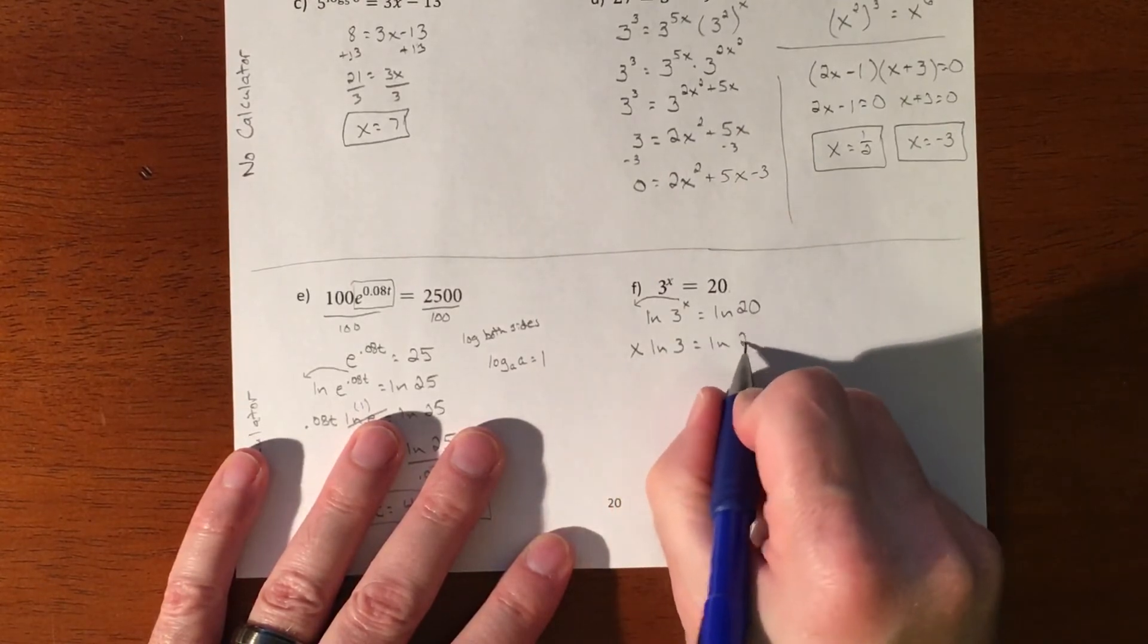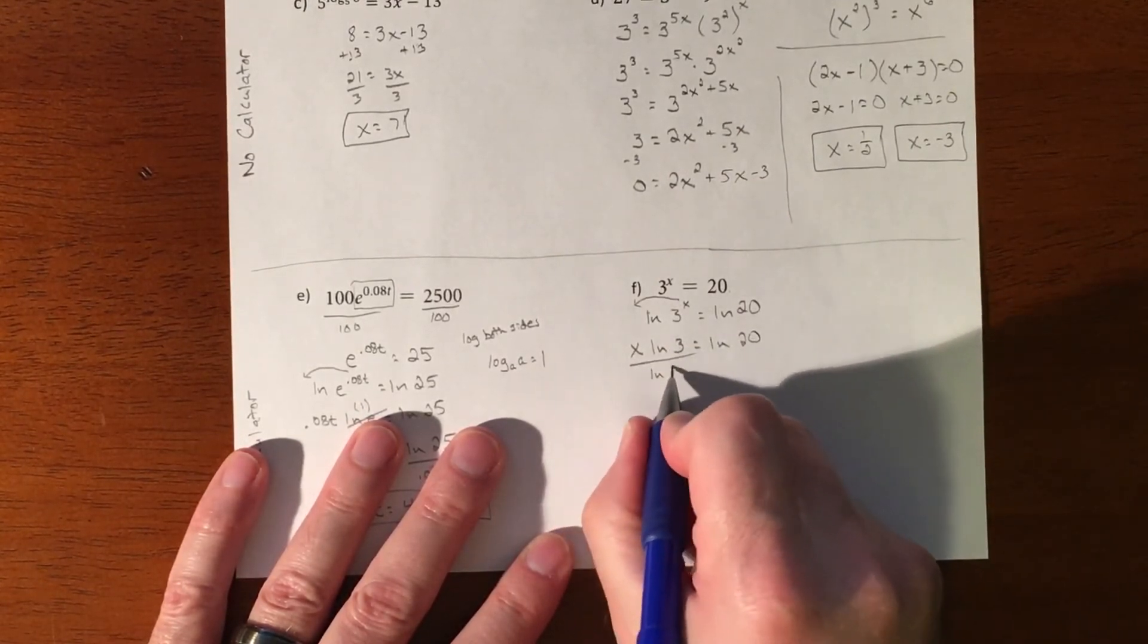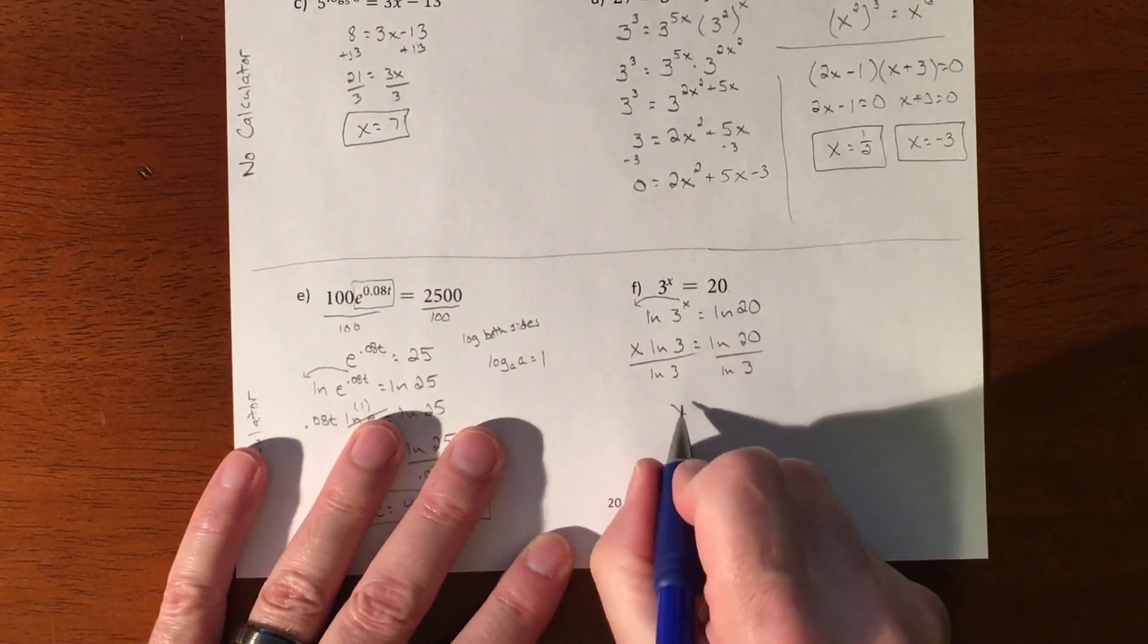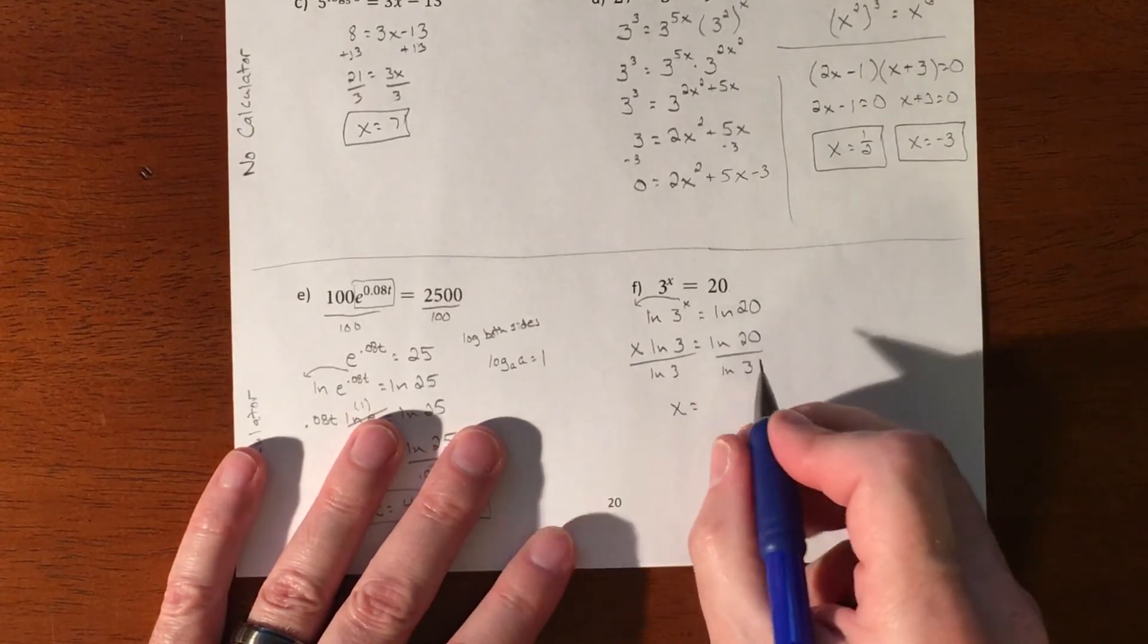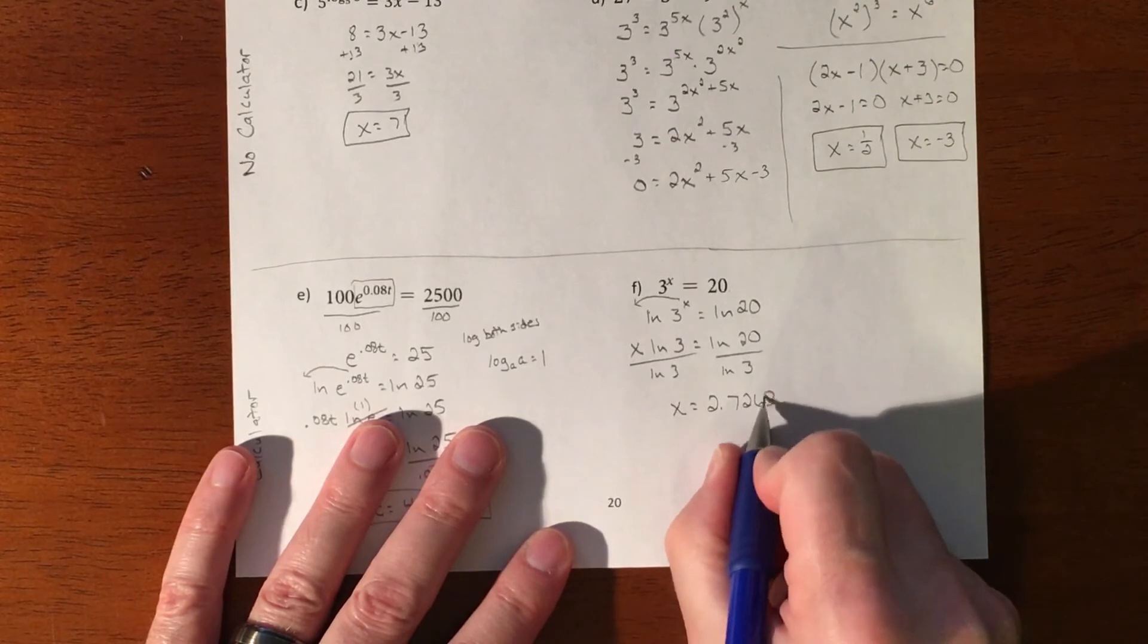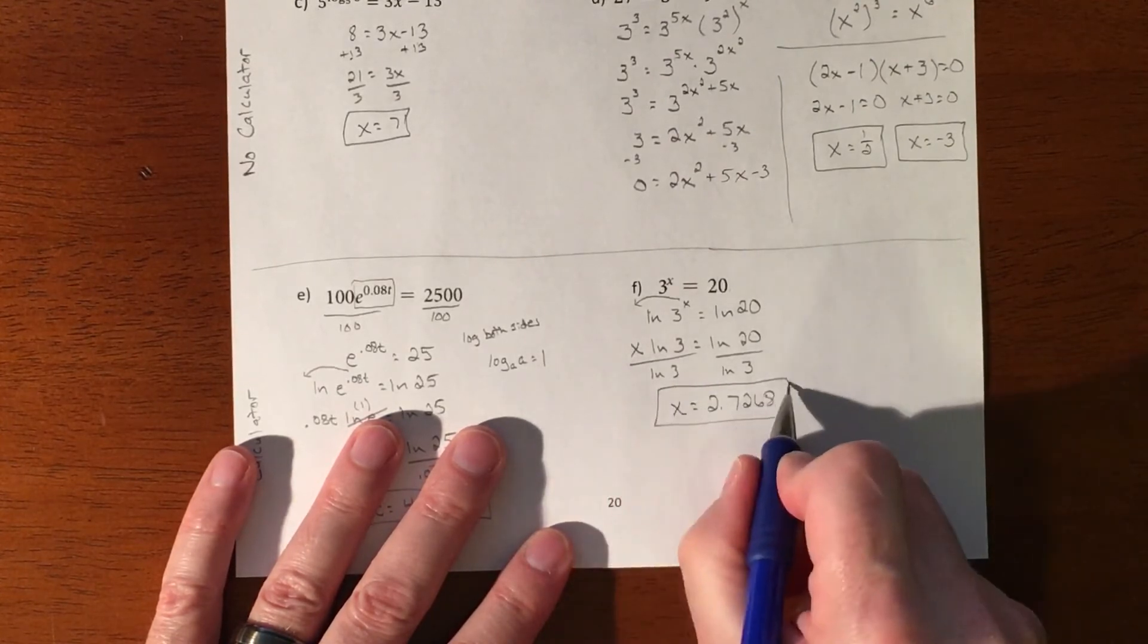Again, the only reason I do that is because the exponent can come in front, which is perfect. And then now this is just some value that we'll divide it over and X is going to equal whatever that decimal becomes, which is 2.7268.